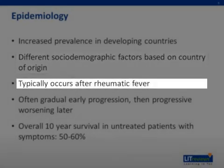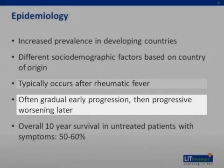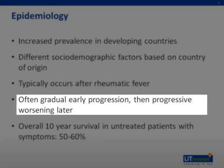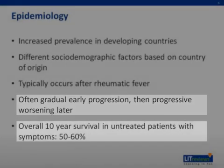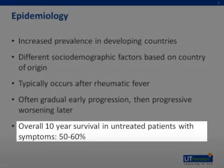In developed countries, there is often 20 to 40 years between the initial infection with rheumatic fever and clinical presentation. The difference in timing is felt to be due to recurrent episodes of rheumatic fever in developing countries. In developed countries, there is usually a prolonged asymptomatic phase, followed by progressive worsening after the onset of symptoms. Unfortunately, 10-year survival in symptomatic patients with MS is only about 50 to 60%.